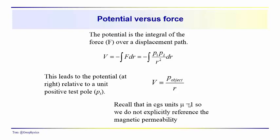We're dealing with CGS units, so the magnetic permeability is equal to one. You might be looking for that one-over-mu in the expression, but we're typically leaving that out. In CGS units our life is simplified because mu is approximately equal to one in the Earth's atmosphere.